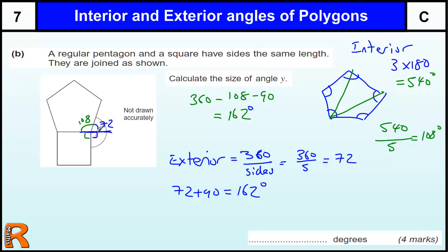And if you're messing up and you think the interior is 72, you should be able to tell you've made a mistake there by looking at it.